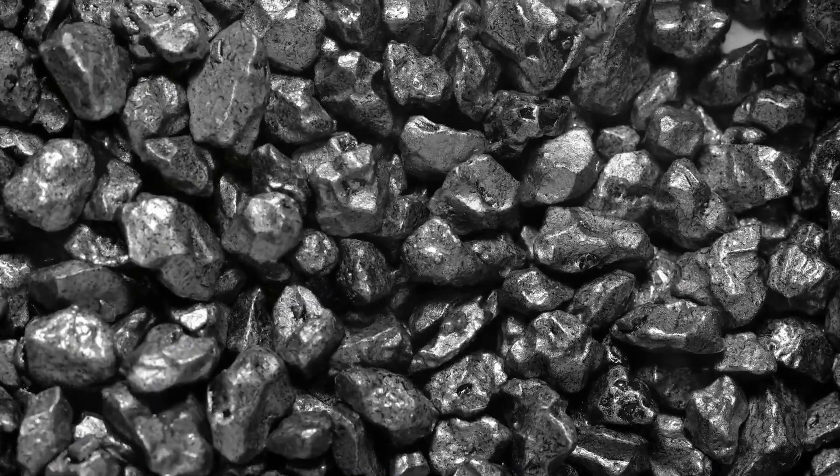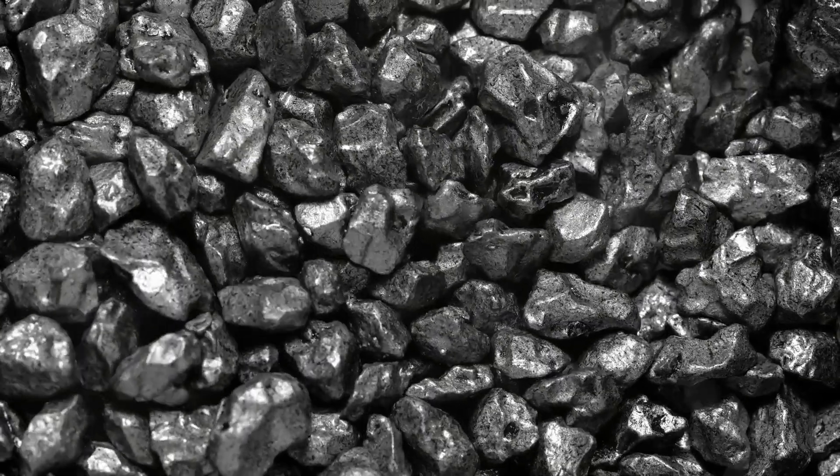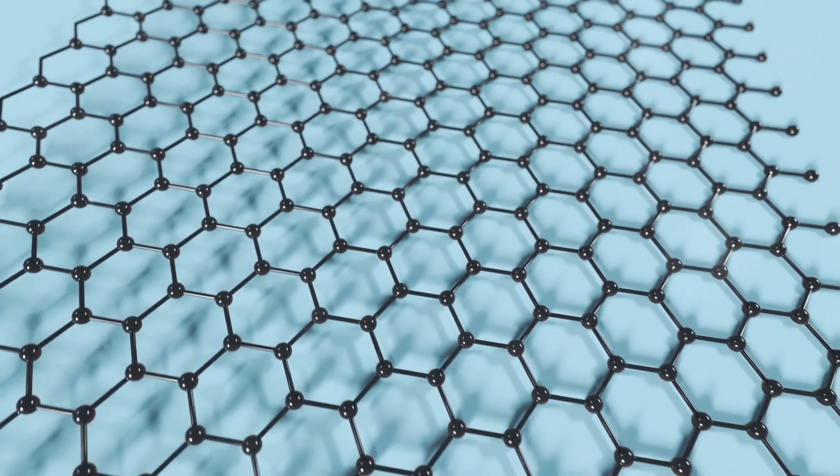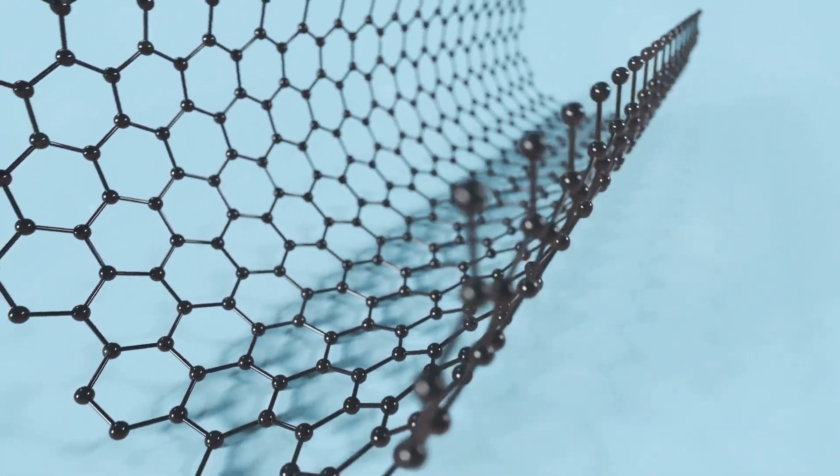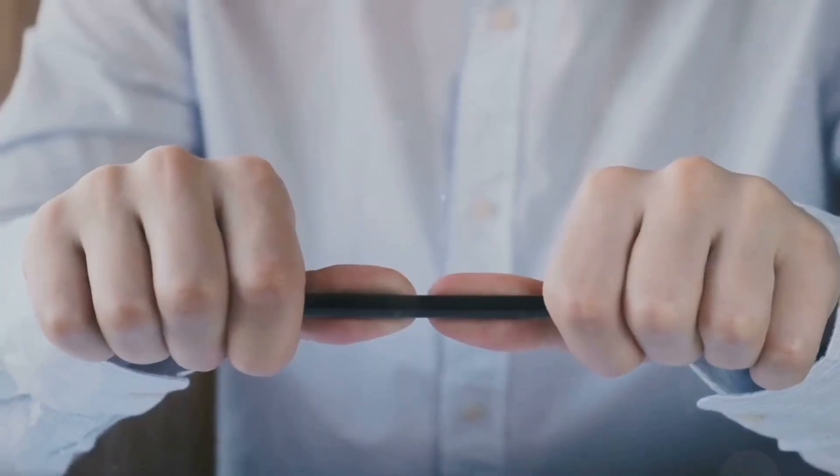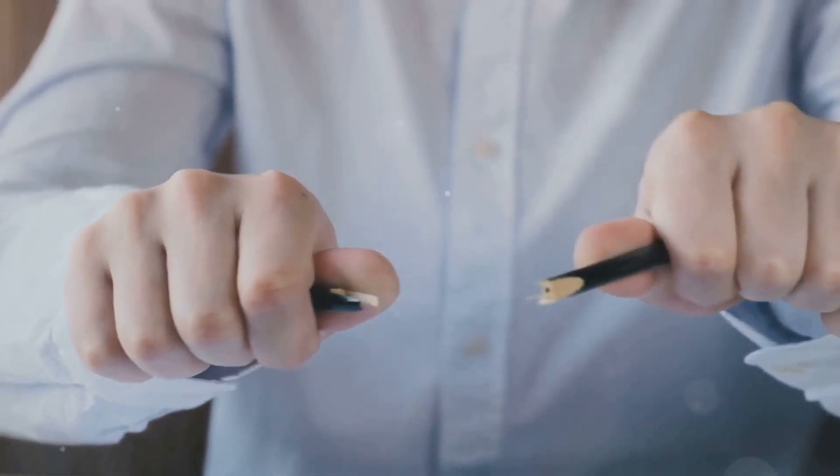At the heart of every pencil lies graphite, a naturally occurring form of carbon. Graphite's unique structure, composed of layers of carbon atoms arranged in a hexagonal lattice, gives it its remarkable properties. These layers, held together by weak forces, can easily slide over each other. This slipperiness is what makes graphite an excellent writing material. When you write with a pencil, these layers shear off, leaving behind a visible mark.